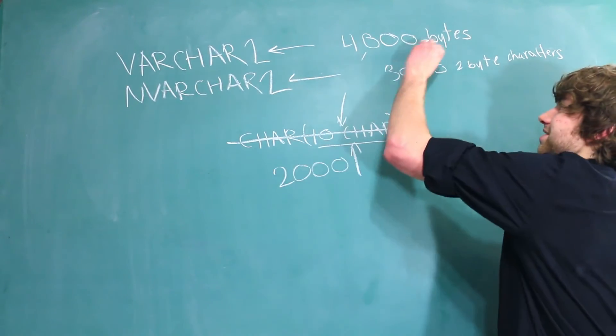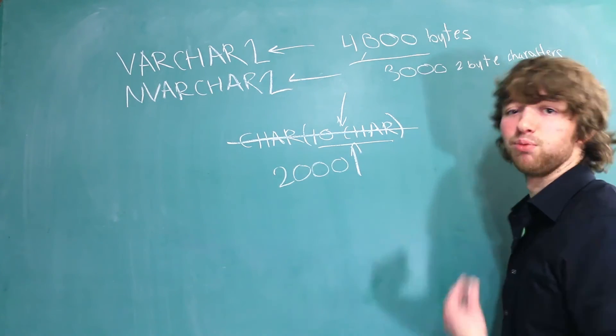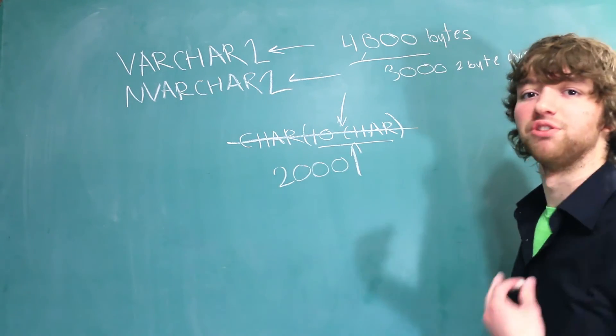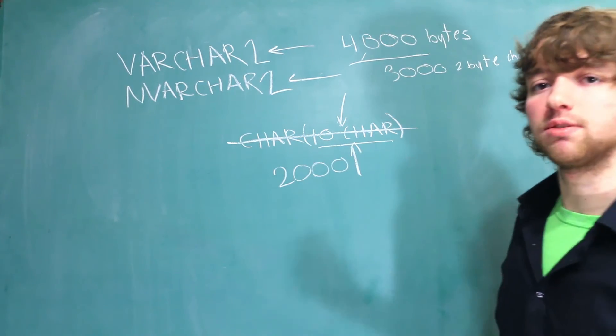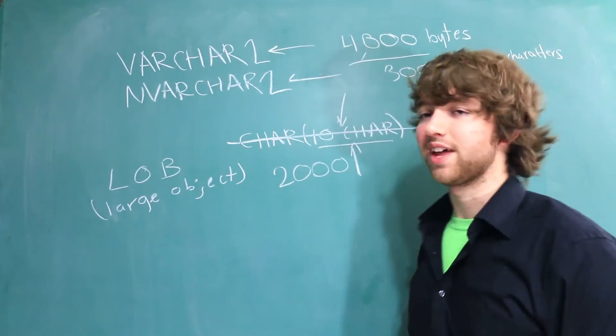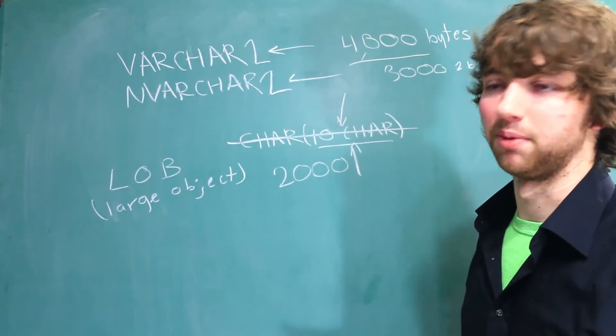Now, 4,000 bytes is definitely more than 2,000. In fact, it's double. But 4,000 is still not a whole lot of bytes. If you need to store more than that, you need to look into the large object data types. Hopefully that is something we can get into in an upcoming video.